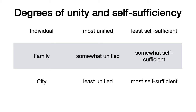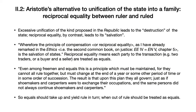Since self-sufficiency is a good, this excessive unification of the city into a family has at least one disadvantage, meaning it's not always the best thing to do. Aristotle's alternative to unifying the state into a family is what he calls reciprocal equality—that exists between ruler and ruled, basically taking turns ruling and being ruled. He says that the excessive unification proposed by Plato in the Republic would lead to the destruction of the state, while reciprocal equality leads to its salvation.